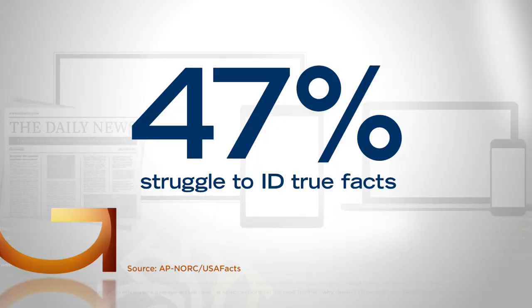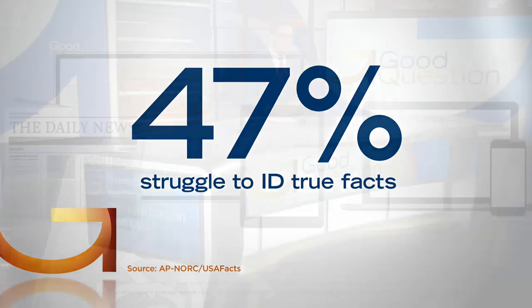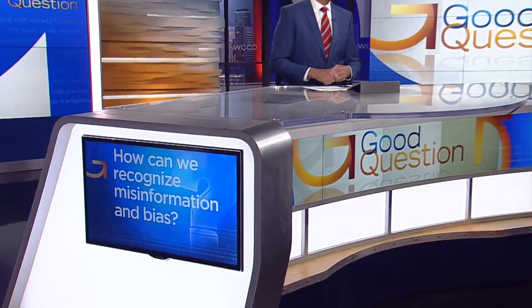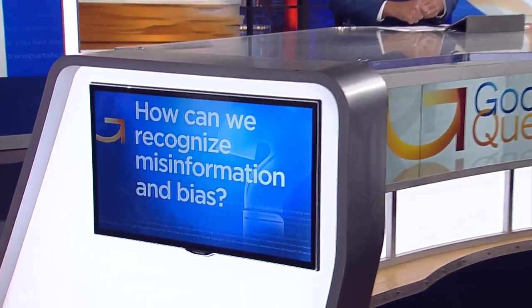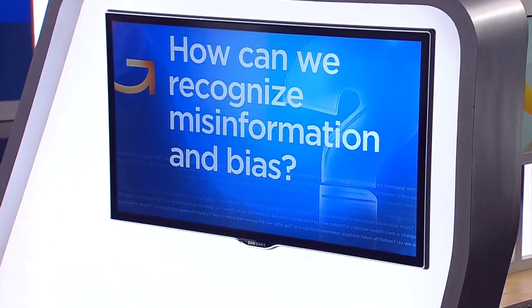We're in the middle of National News Literacy Week, an event to help people better understand what information is credible and what's not. An AP poll found almost half of Americans say it's difficult to know if the information they take in is true. How can we recognize misinformation and bias? Here's Heather Brown.